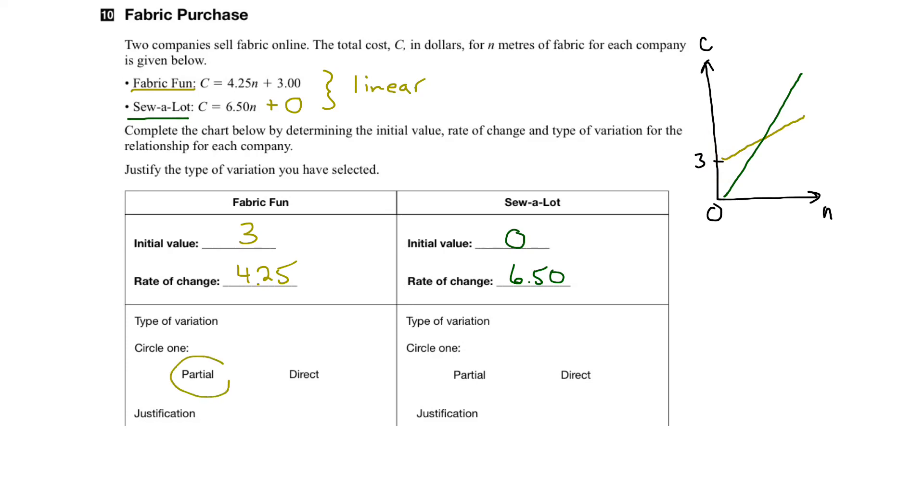So, we circle partial variation, and the justification is that it has a fixed cost. In other words, it has a y-intercept other than zero. And you can also say that the cost line doesn't go through the origin, which is the point (0,0).